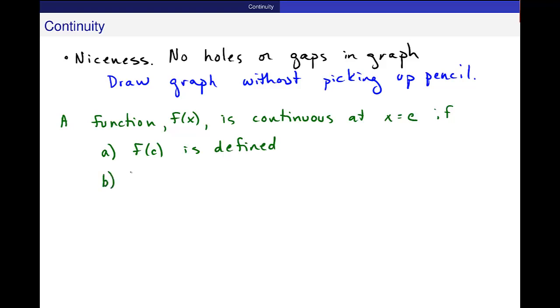b) The limit as x approaches c of f(x) exists. So the two-sided limit exists. That's what it means when I don't have a plus or minus after that c. And c) the limit as x approaches c of f(x) is actually equal to f(c), is actually equal to the function value.